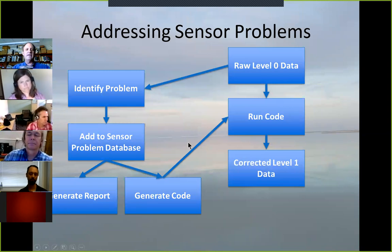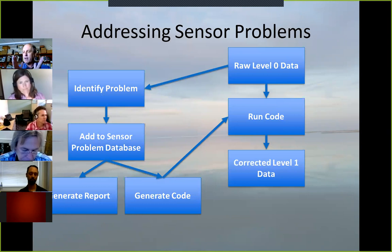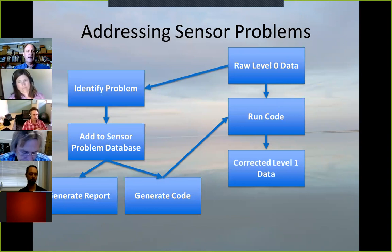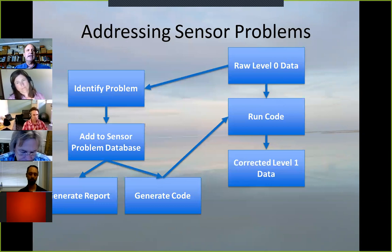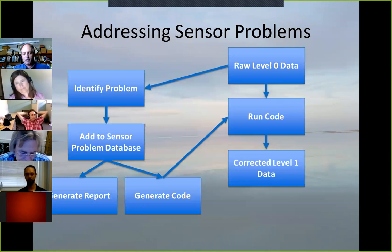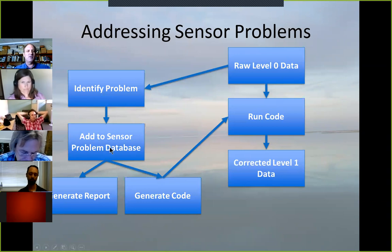Talking about sensor problems — this is something still a little bit under development. There are a couple of approaches being used in the network. One of them is the approach Wade uses, where you pull in data, run it through a set of checks, make corrections, and write out the level one data. Since we have data streaming in, I don't want to come into the office each day and go through those steps manually. I want a workflow that's going to do it for me, while also flagging problems. So I have a sensor problem database.